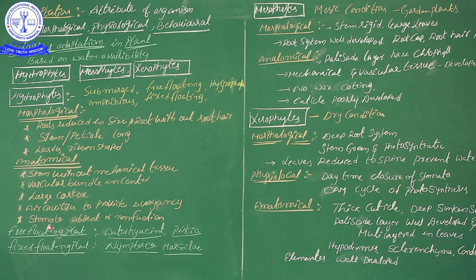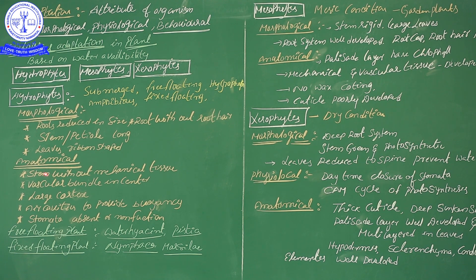Stomata are absent, or if present, they are non-functional. This covers the morphological and anatomical adaptations of hydrophytes. Anatomy means the internal arrangement of tissue inside the microscopic structure. Some of these characteristics are also seen in free floating and fixed floating plants.